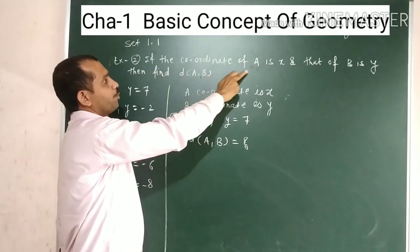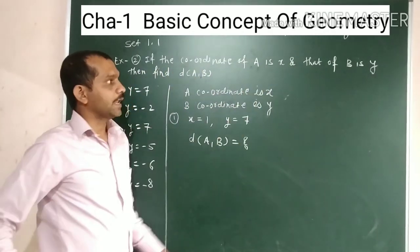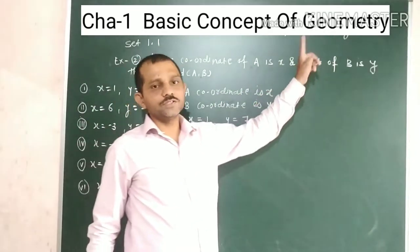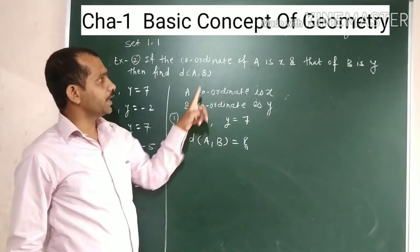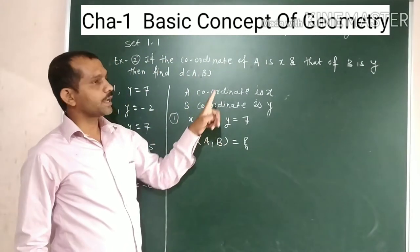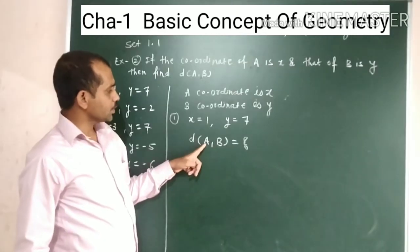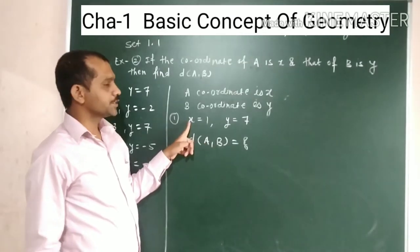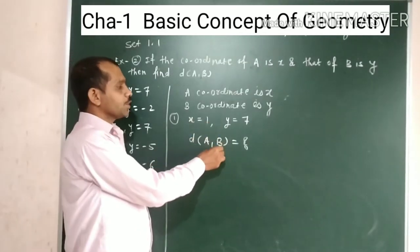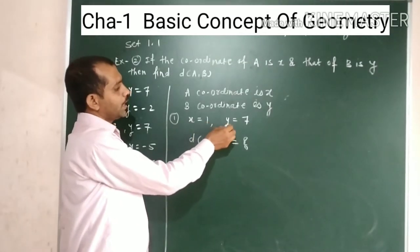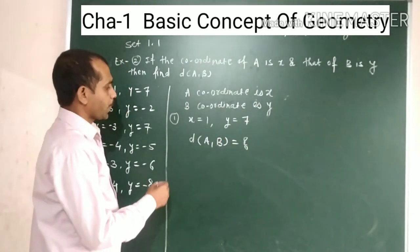If the coordinate of point A is x and that of B is y — A's coordinate is x and B's coordinate is y. The x value is 1 and the y value is 7.